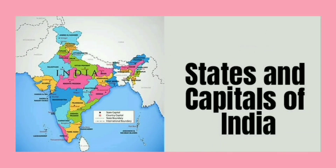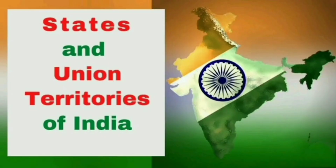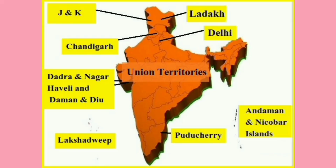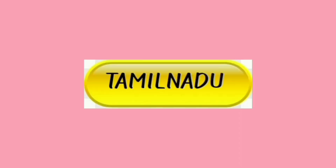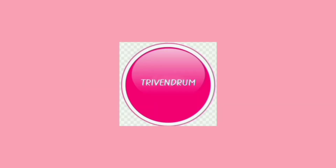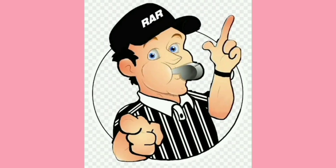Hi children! Welcome to the activity of Mapwork. You have to name the states of India, its capitals, and Union territories in this activity. You will find the map of India in front of you, and you will be given the name badges of all the 28 states and their 28 capitals, 8 Union territories and their 8 capitals in your hands.